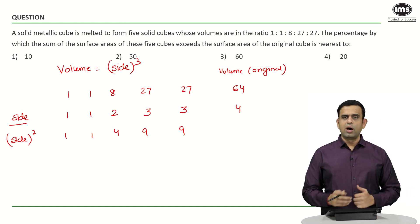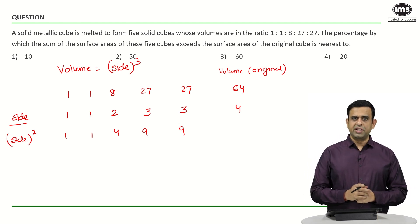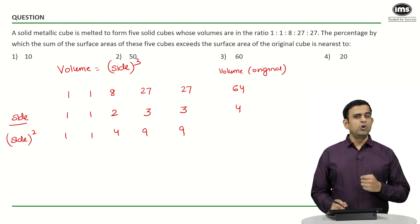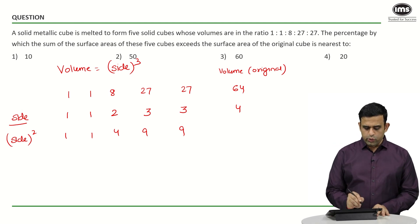The surface area of the five pieces put together will be 6 times side squared. The 6 will get cancelled out, so the total surface area...